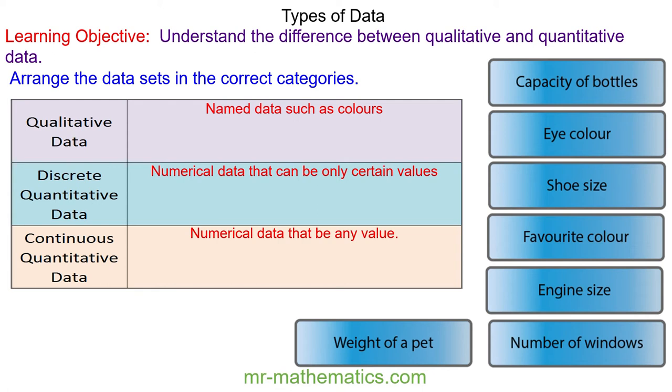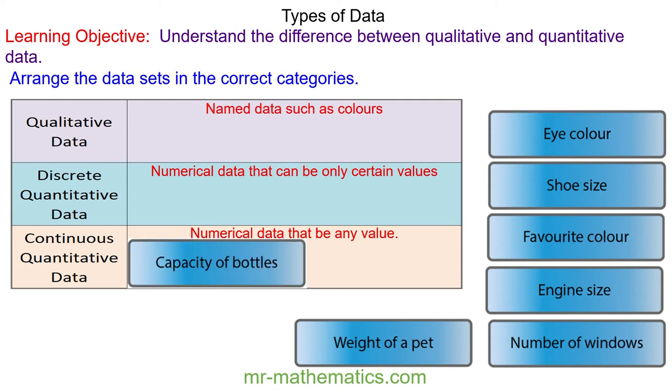So capacity of bottles would be continuous quantitative data because the bottle can have any amount of volume or any amount of liquid inside it.